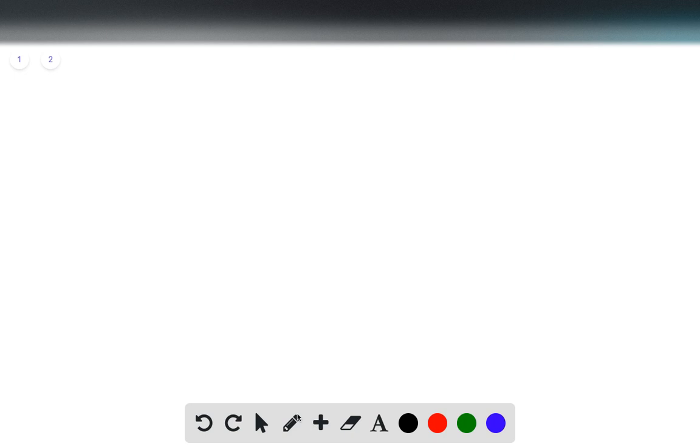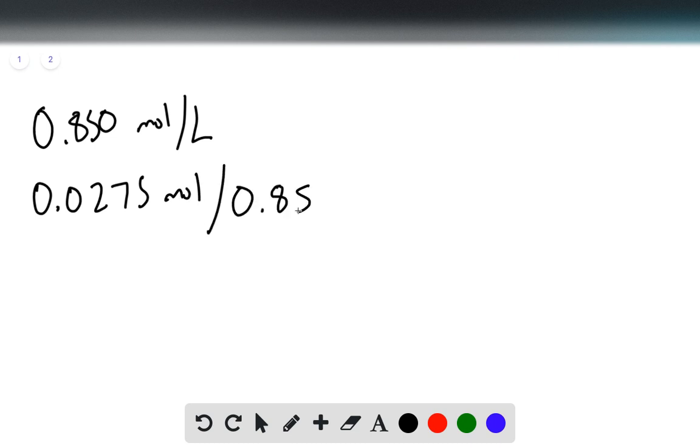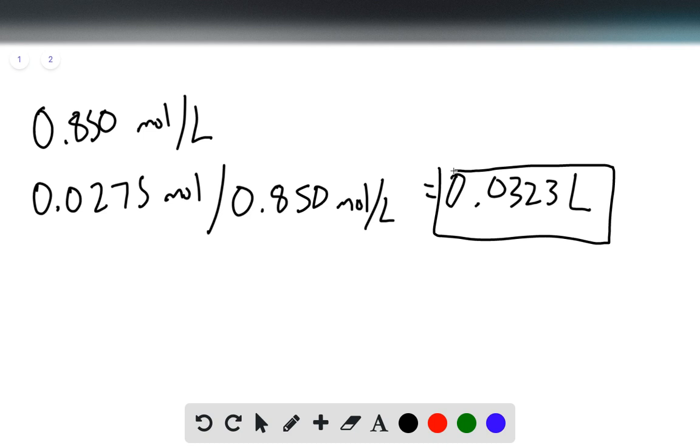Now that we have that, we can use the definition of molarity. We have 0.850 moles per liter. If we take our 0.0275 moles and divide that by 0.850 moles per liter, we get 0.0323 liters. This is our final answer,